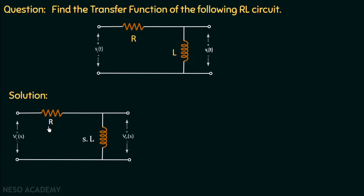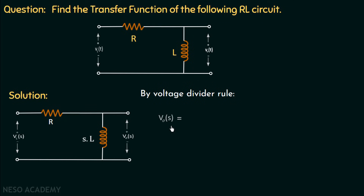The impedance of the resistor is R. The impedance of the inductor is SL, and the output voltage Vout(s) is measured across this inductor. The resistor and inductor are connected in series, so the voltage gets divided. We can find the output voltage across the inductor using the voltage divider rule: Vout(s) equals Vi(s) multiplied by SL divided by the total impedance R plus SL.